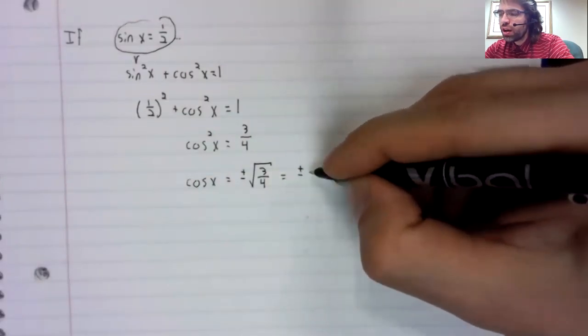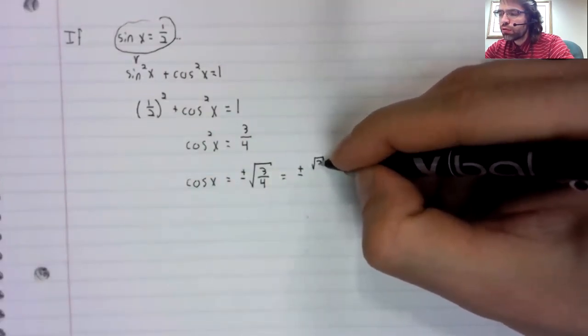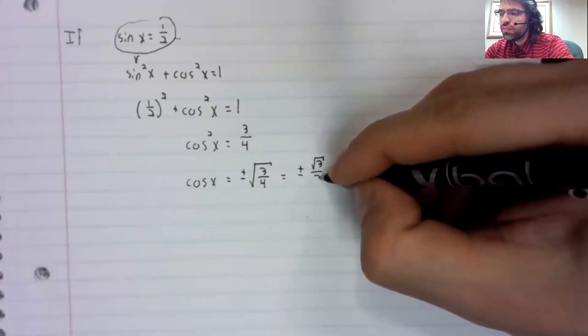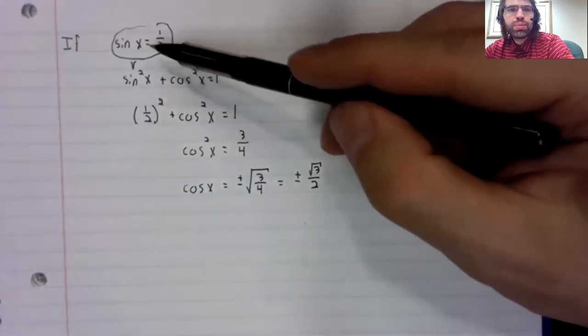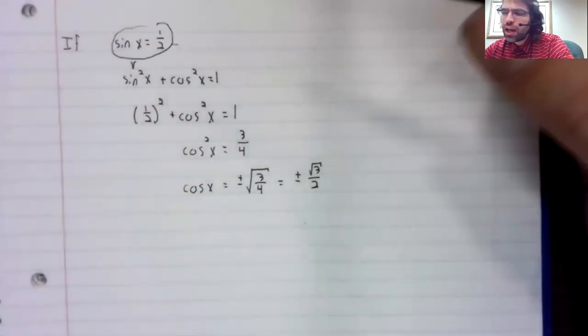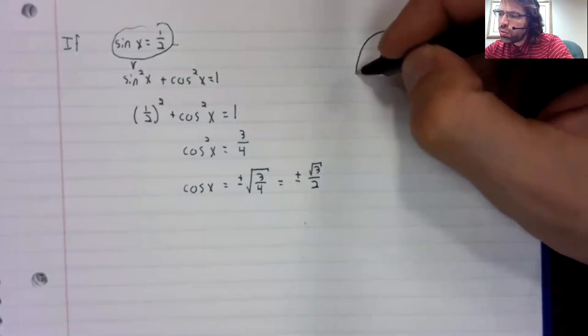which I'll simplify as the square root of three over two. And that's because remember that the sine is a y coordinate.